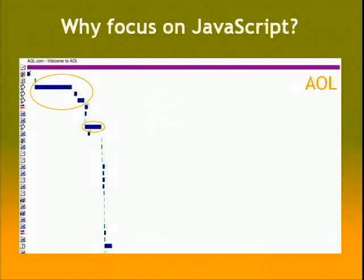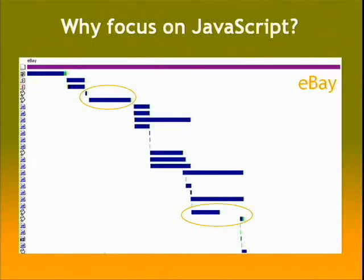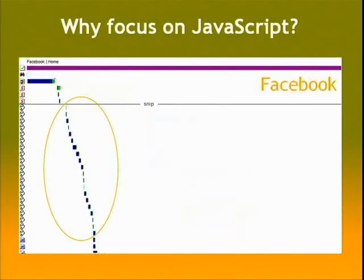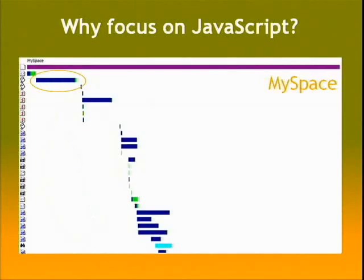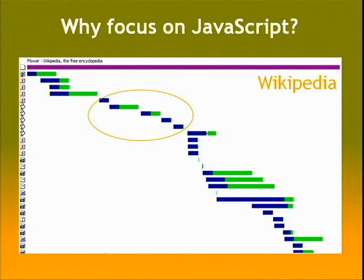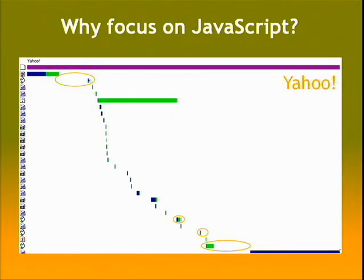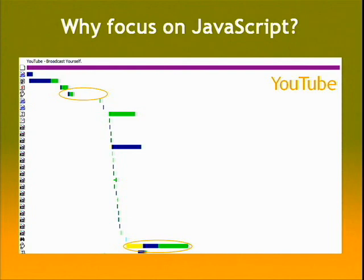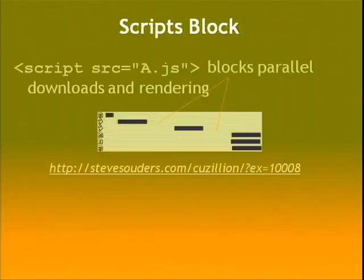So why focus on JavaScript? Here are some of the Alexa top 10 US sites and I've circled the JavaScript HTTP requests in their waterfall charts. There's sometimes a lot of JavaScript, and even when there's a small amount, it takes a disproportionate load time for the overall page. Even though there might not be many requests, they take up a majority of the loading time because scripts block - they block parallel downloading and rendering in the page.